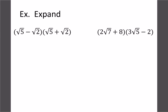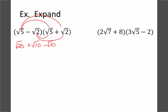Let's try a full FOIL example with (root 5 minus root 2)(root 5 plus root 2): root 5 times root 5 is root 25, root 5 times root 2 is root 10, negative root 2 times root 5 is negative root 10, and negative root 2 times positive root 2 is negative root 4. Root 25 simplifies to 5. The root 10 minus root 10 cancels to 0. Root 4 is 2. So the whole expression simplifies to just 3.